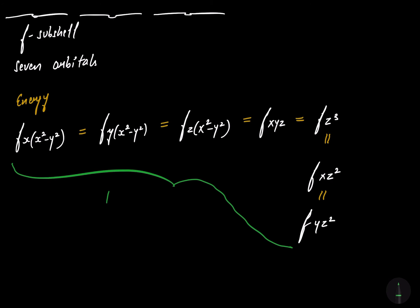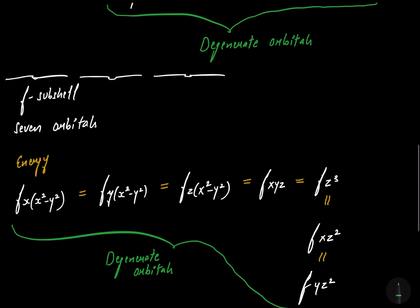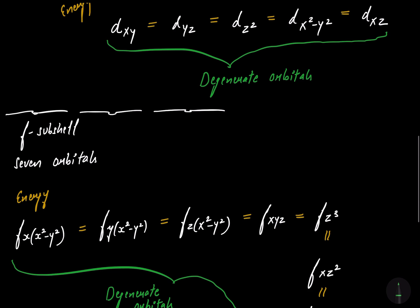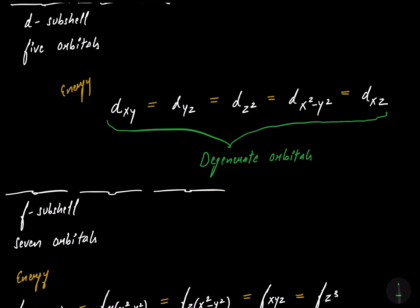These seven F orbitals are degenerate orbitals, having equal energies within the same subshell. One important point to remember: degenerate orbitals are only present within the same subshell. The energy of any F orbital is not equal to the energy of any D orbital. Degenerate orbitals are always present within the same subshell only.